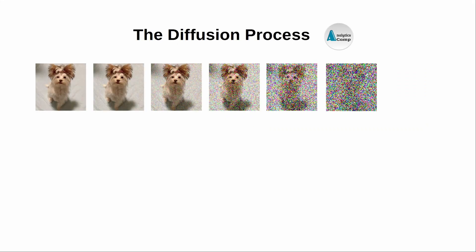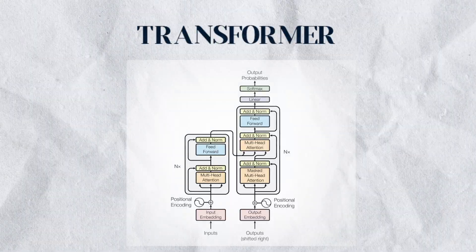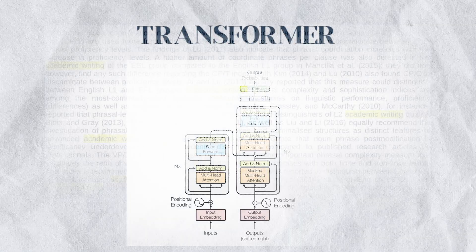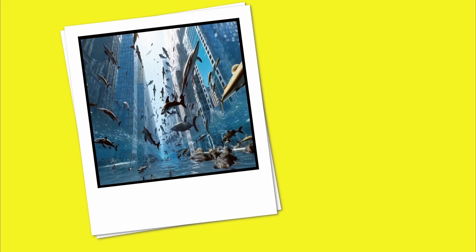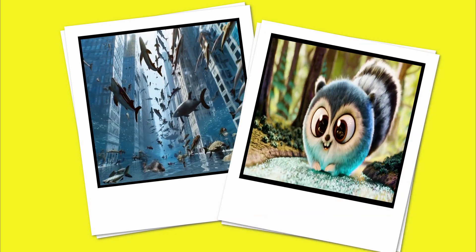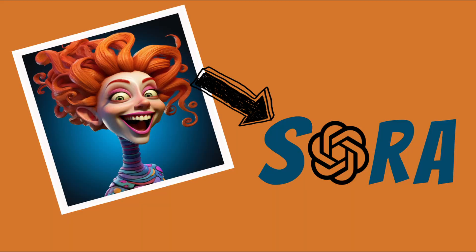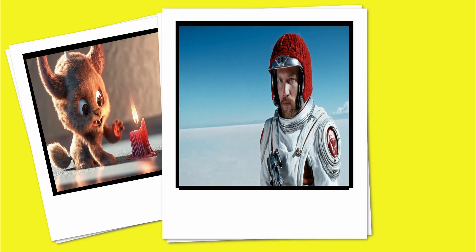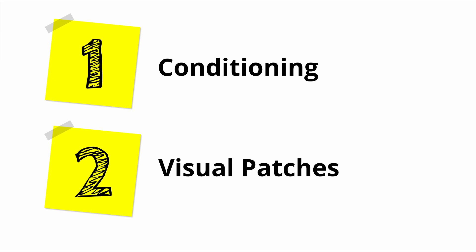By combining the diffusion model, which works through noisy data to obtain clean new data, and transformers, which are known to be great at scaling sequence lengths, Sora can generate videos and scale them with different resolutions, aspect ratios and durations. Genius, right? Now before I get into the nitty-gritty of Sora's video generation model, I have to touch on two important concepts: conditioning and visual patches.